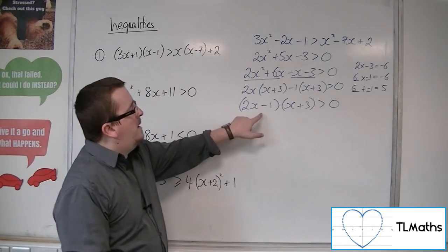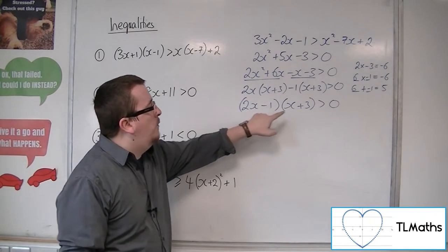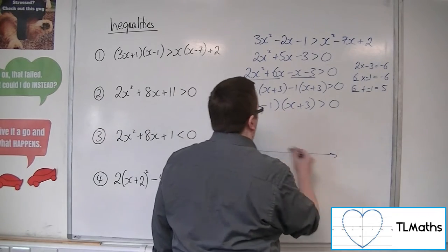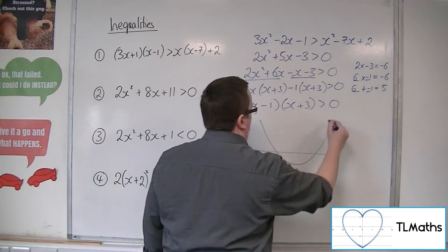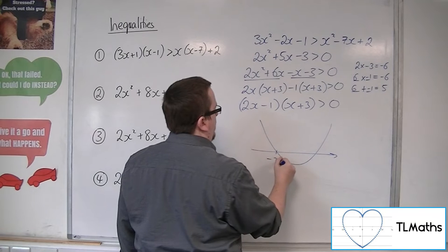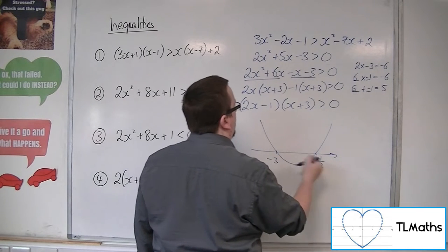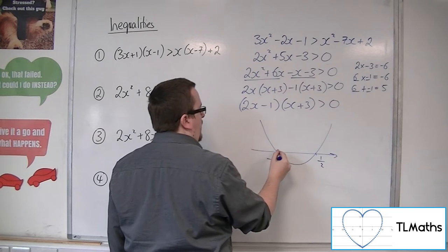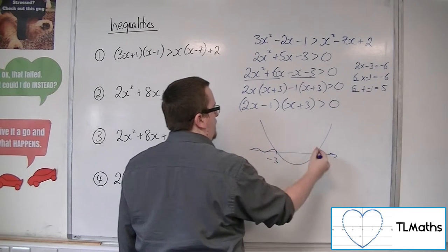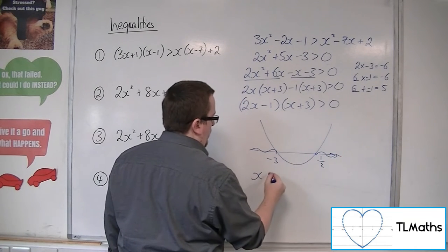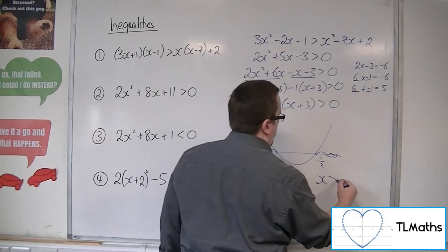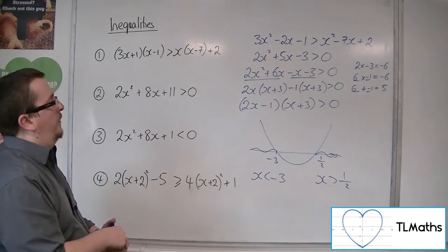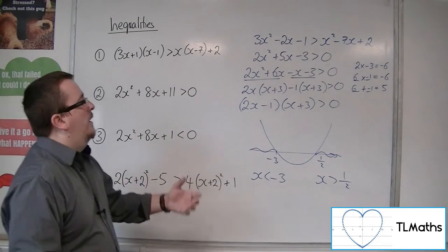This is a parabola that crosses the x-axis at one half and minus 3. It's a positive parabola, crossing at minus 3 and one half. Where is the parabola above the x-axis? It's above it in two regions, giving two inequalities. And that solves the first one.